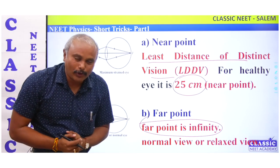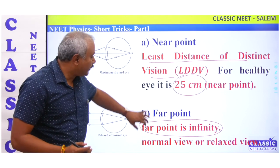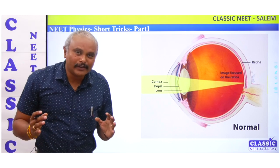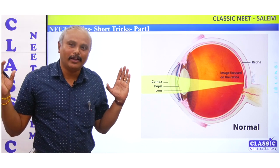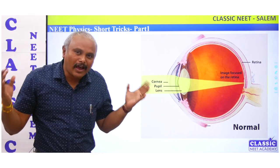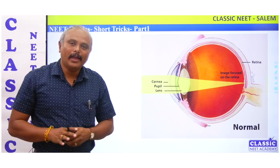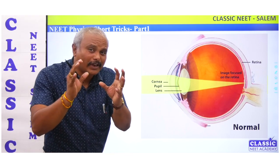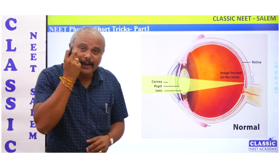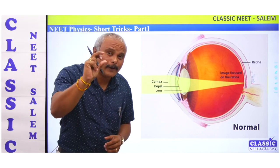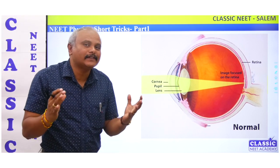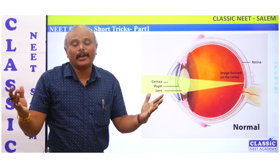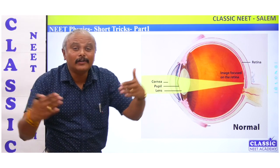Let's see what we know about short-sightedness. What is happening in the eye? In the eye, there is a lens. The lens in the eye is a convex lens — a converging lens.